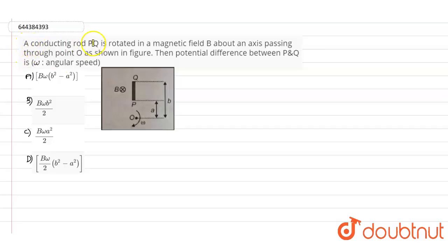So here in this question, it is given that a conducting rod PQ is rotating in a magnetic field capital B about an axis passing through the point O as shown in this figure. Then potential difference between P and Q is, where omega is the angular speed.